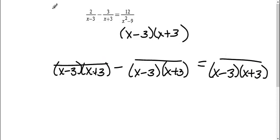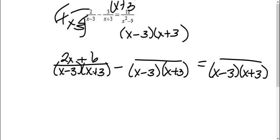Okay, this first one was missing the x plus 3, so I need to multiply this by x plus 3. 2 times x is 2x, 2 times 3 is 6. This next one was missing the x plus 3, so I need to multiply this by x plus 3. I distribute that 3, 3 times x is 3x, 3 times 3 is 9.